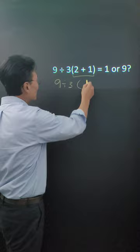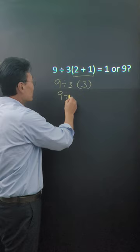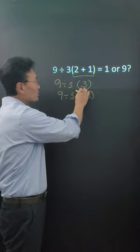Let's go ahead and rewrite this as 9 divided by 3 times 3, since 3 times, or 3 parentheses 3, is the same thing as 3 times 3.